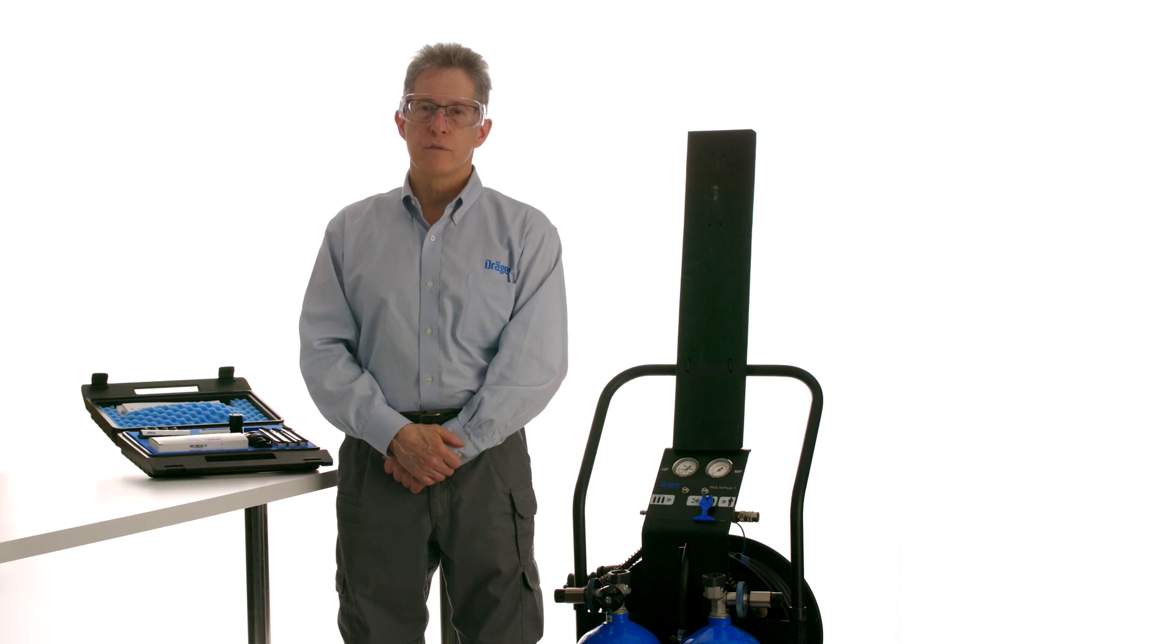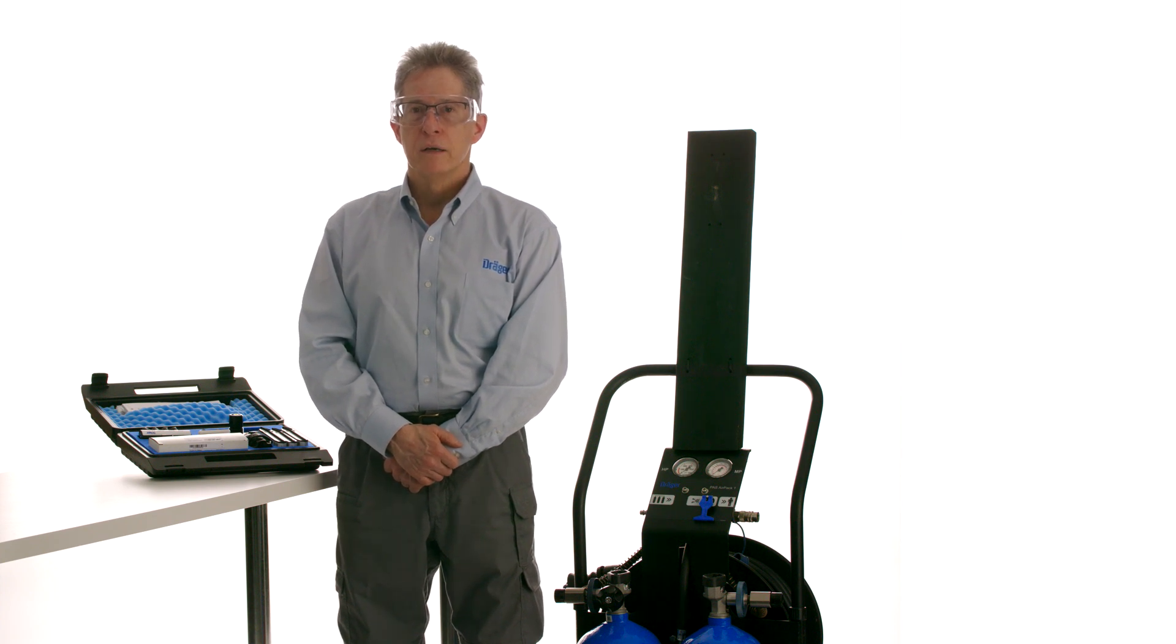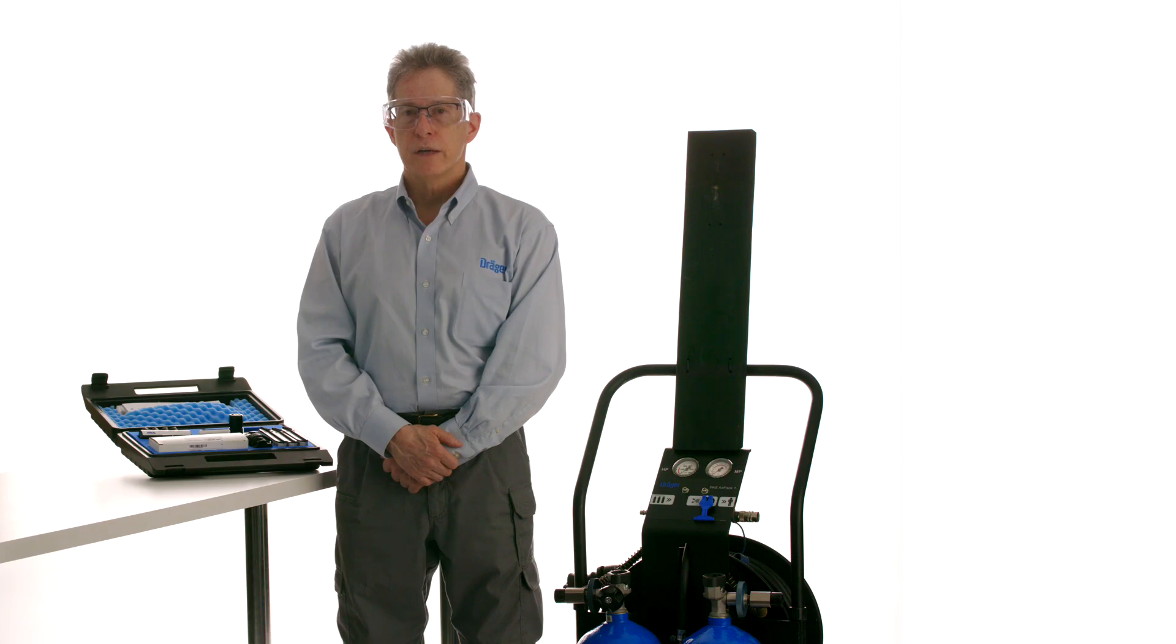The Draeger Aerotest Alpha is designed for low-pressure applications in the 43.5 to 290 PSI range, testing directly from a plant airline, low-pressure compressor, or mobile air cart. I'll be guiding you through the assembly and testing step-by-step. Using the Aerotest is an effective way to check if your breathing air is safe and uncontaminated.